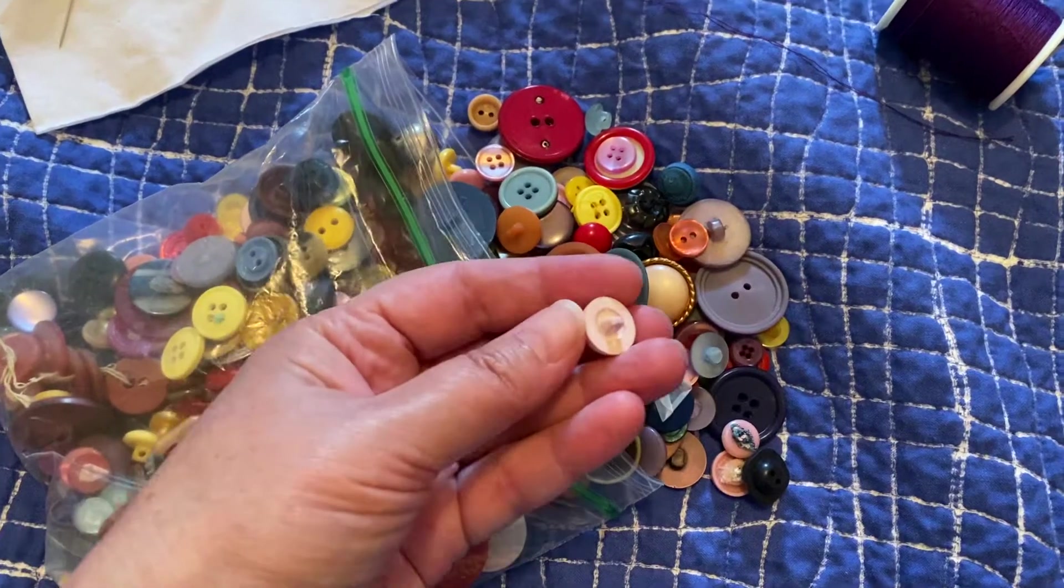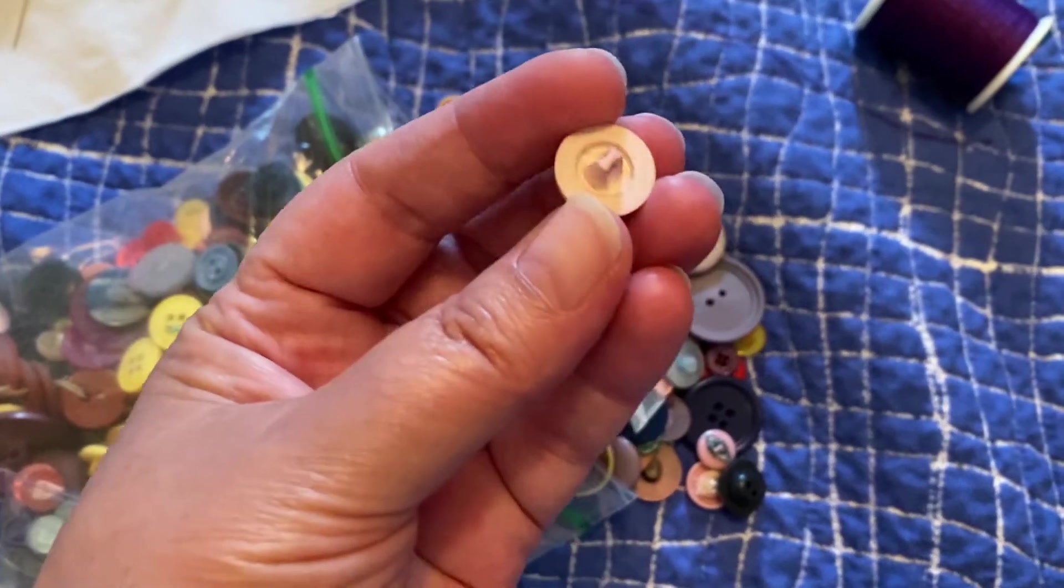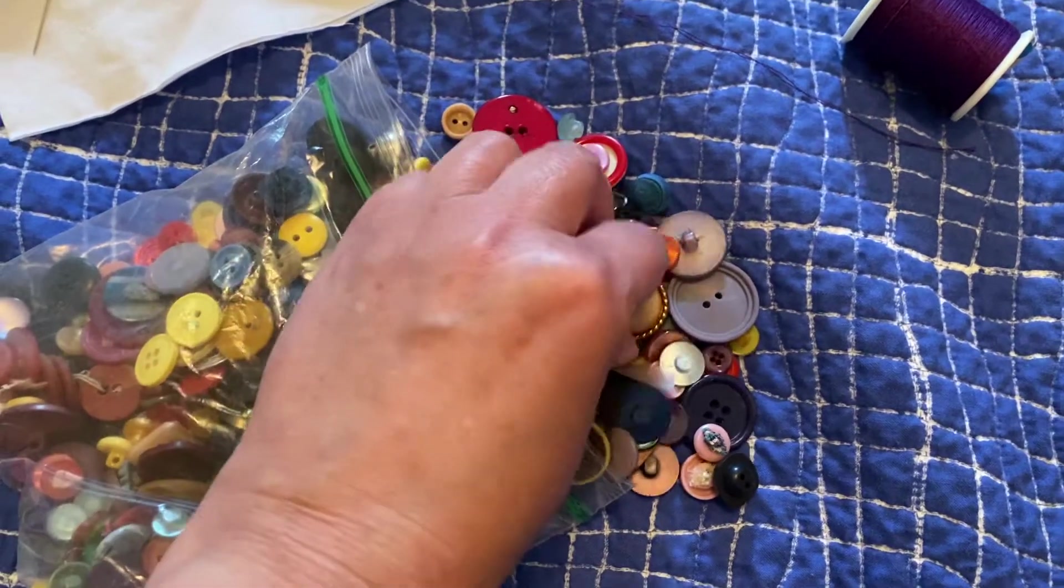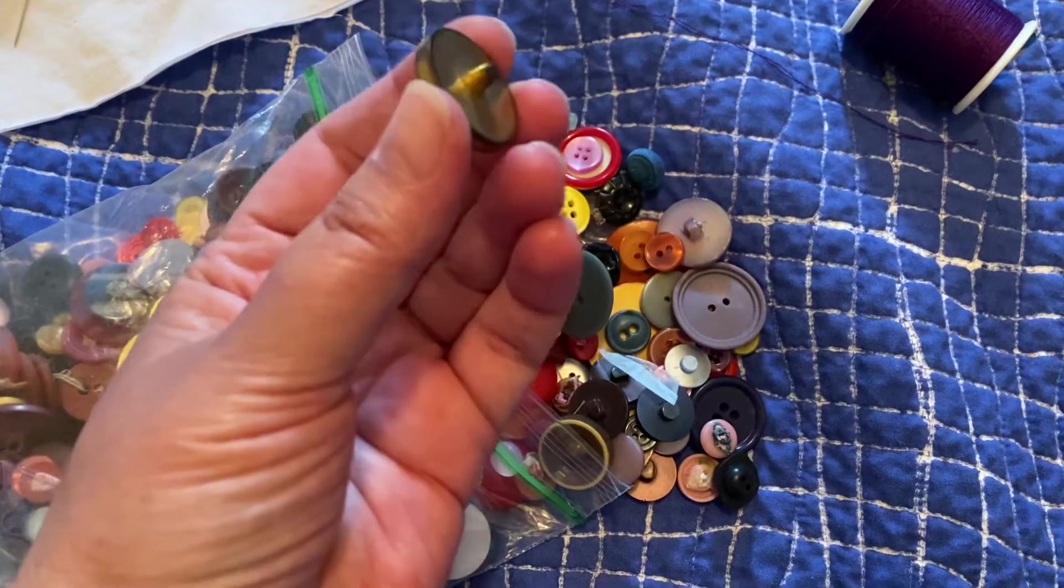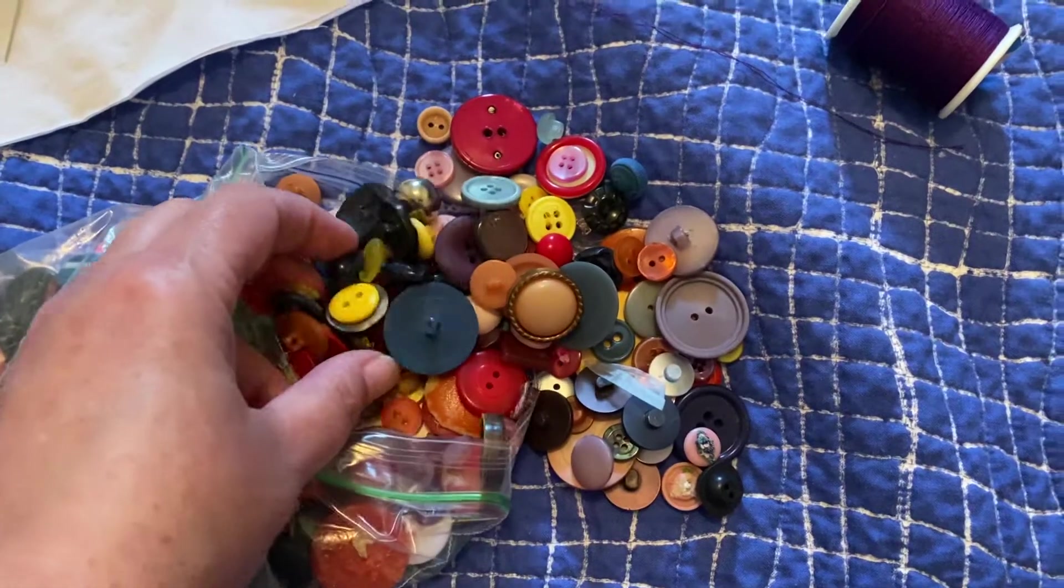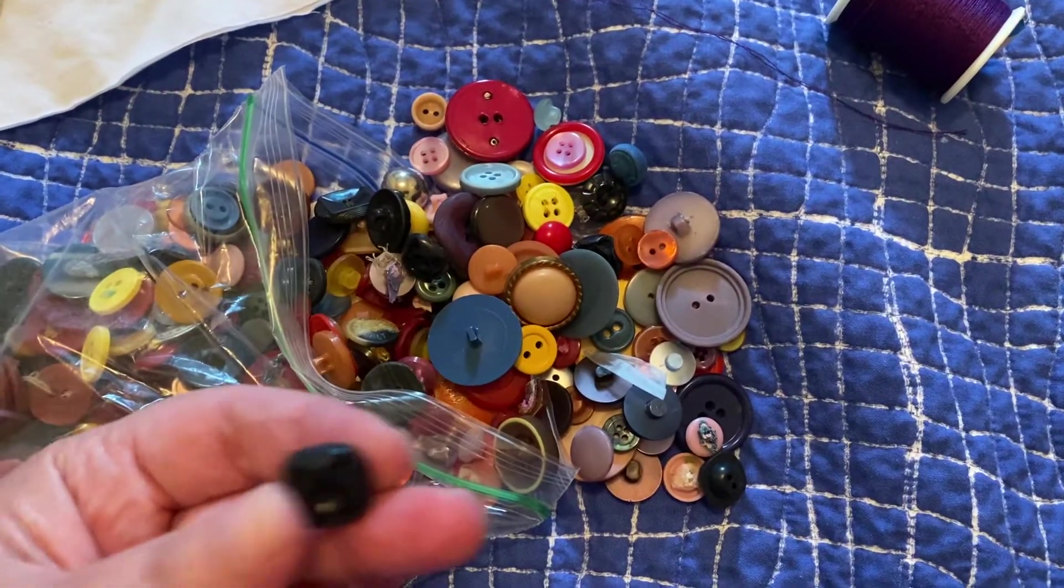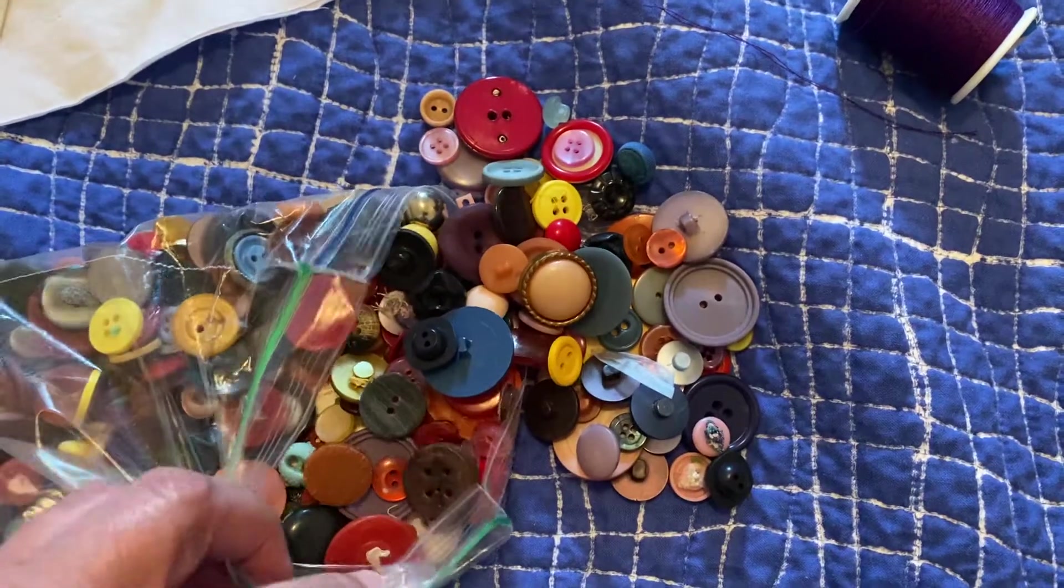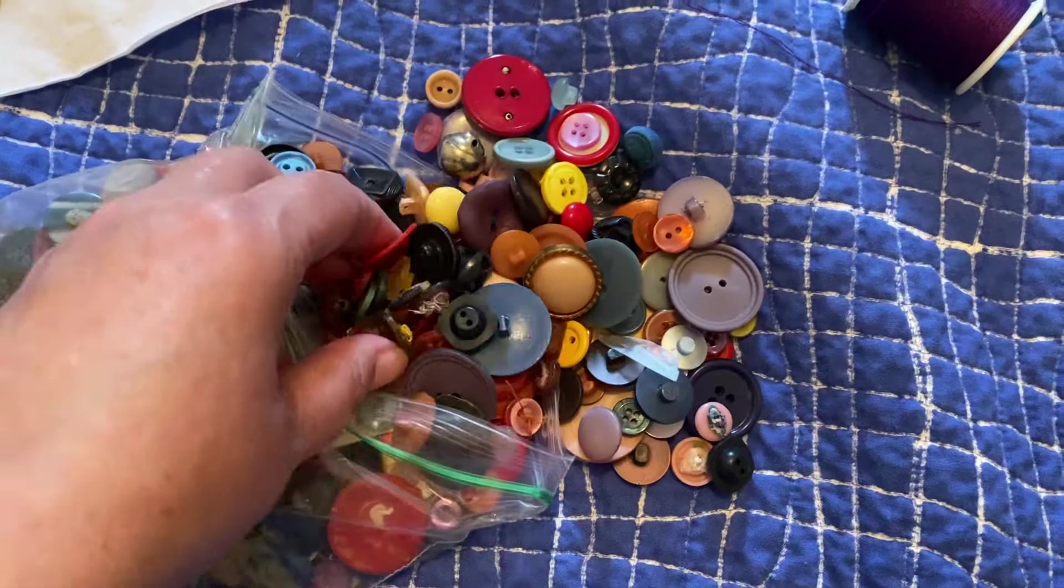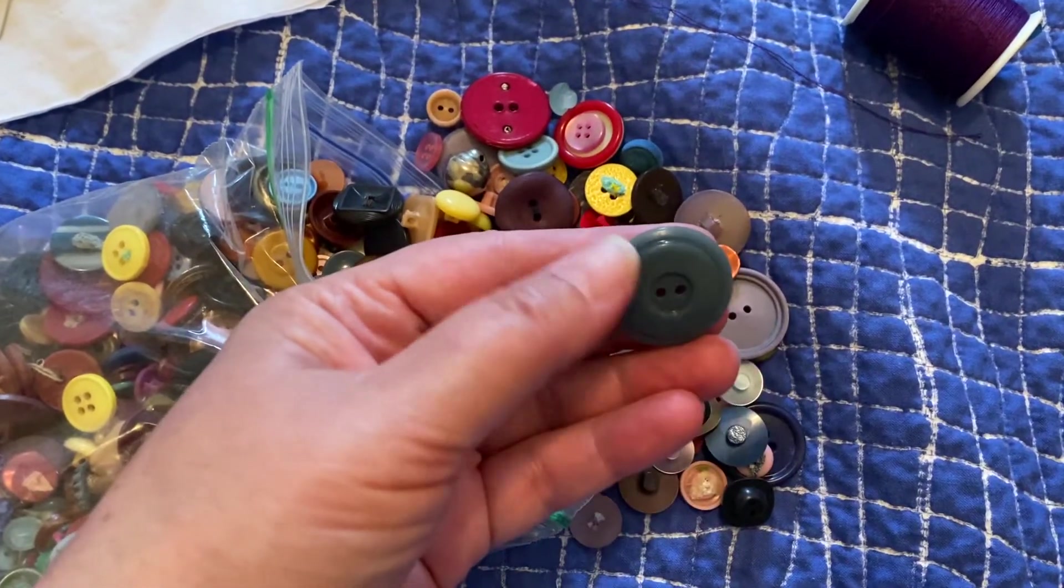This is called a shank button. As you can see, there's not a hole on the top, but on the back, there is a place to sew it on. This one also is a shank button. If you're going to break it down into two types, there's the regular buttons and then the shank button. We're going to learn how to do one of each so that you know how to sew buttons on or repair buttons.